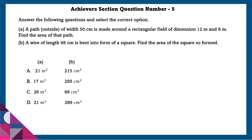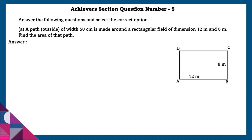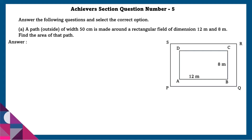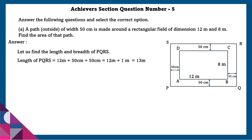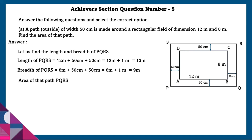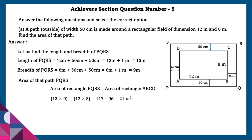Achiever section question number 5: A path of width 50 centimeters is made outside a rectangular field of dimensions 12 meters and 8 meters. Find the area of the path. Length of PQRS is 12 plus 1 equals 13 meters. Breadth of PQRS is 8 plus 1 equals 9 meters. Area of the path equals area of rectangle PQRS minus area of ABCD, that is 21 square meters.